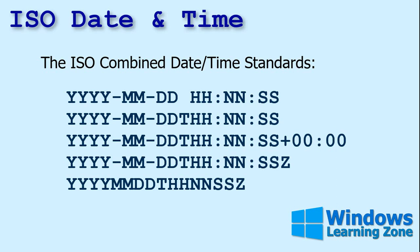Of course, you can put them together — a date value with a time value. As you know, if you use Microsoft Excel or Access, each data point can be a day and time together in the same field. Here's a date with a space and then a time.